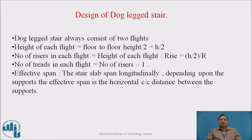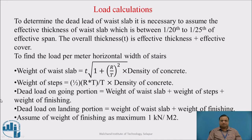Effective span. For a stair slab spanning longitudinally, the effective span is the horizontal distance between center to center of the supports. To determine the dead load of the waist slab, it is necessary to assume the effective thickness of the waist slab, which is 1/28 to 1/25 of the effective span.